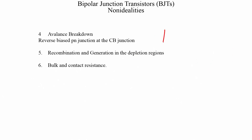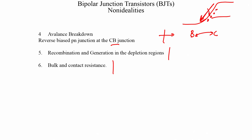The remaining non-idealities — avalanche breakdown at the reverse-biased collector-base junction, recombination and generation in the depletion region, and bulk and contact resistance — were already discussed in the context of PN junction diodes and the same ideas apply here. For avalanche breakdown: under heavy reverse bias at the collector-base junction, the large electric field gives electrons enough energy to create an avalanche of carriers by ionizing silicon atoms.